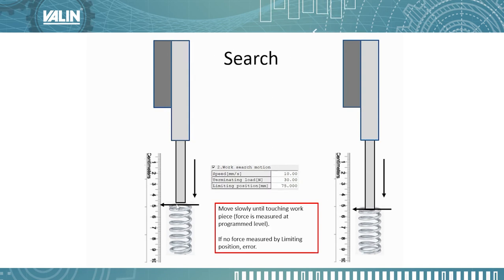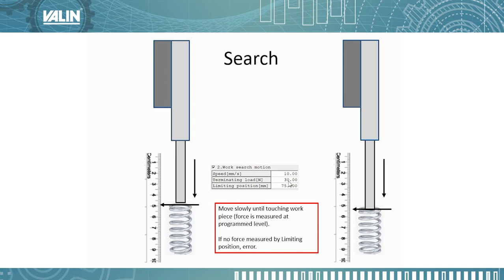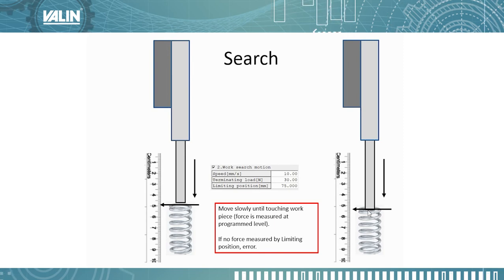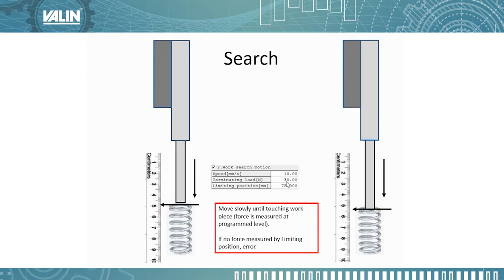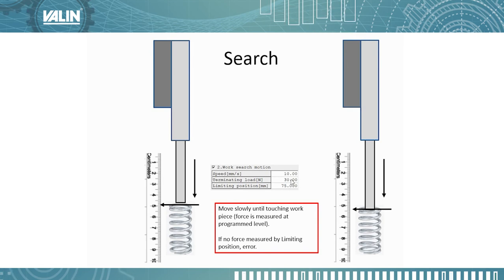In the search step, we start where the approach step ended and we're going to look for a terminating load — in other words, a certain amount of force feedback. This 30 is a little high; I'd probably normally set it at about 10. We'll push down until we see a little bit of force feedback, and once that force feedback matches the terminating load, we'll transition to the press step — basically, we've just found the part. If there's no part and we pass the limiting position without seeing proper force feedback, that will cause an error and we'll fault out, indicating that we didn't have a part to press on.